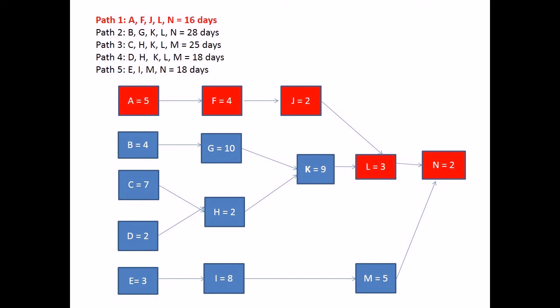Path 1, highlighted here in red, has a total duration of 16 days. Add up the duration of each activity to determine the total duration for the path. For example, 5 plus 4 plus 2 plus 3 plus 2 equals 16. Follow the arrows to understand the relationship between the activities.